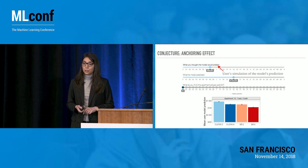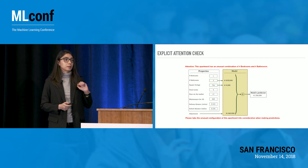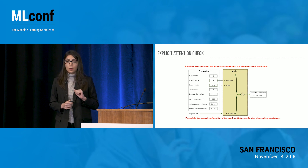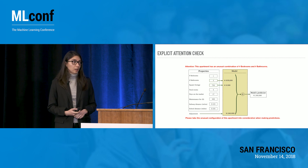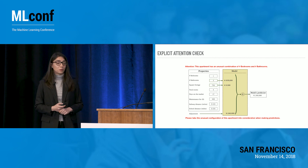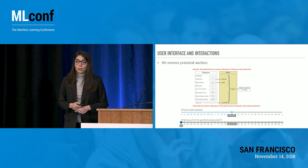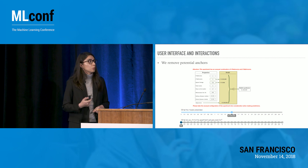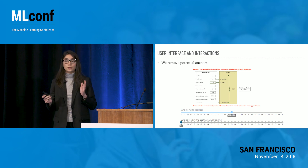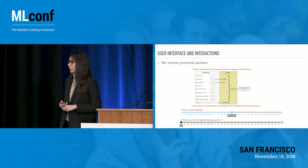Given those two conjectures, we designed a follow-up experiment focused on people's ability to detect the model's mistakes. We provided explicit attention checks, telling participants that the apartment had one bedroom and three bathrooms — that this was weird and they should take it into consideration. We also removed potential sources of anchoring by simply not asking people to simulate the model anymore.